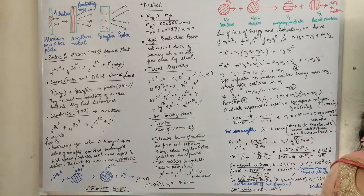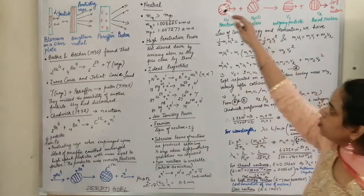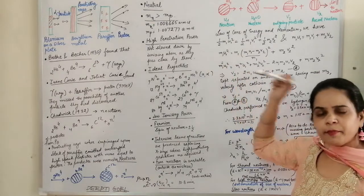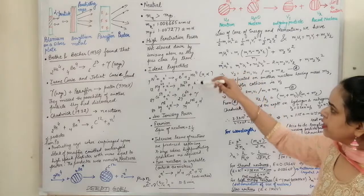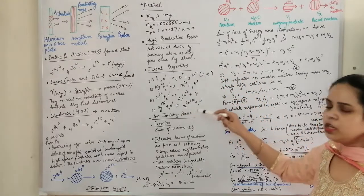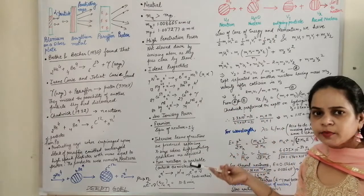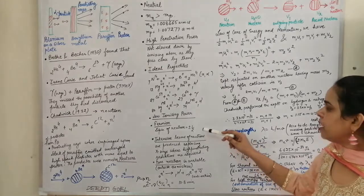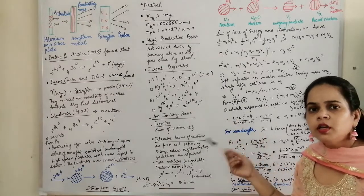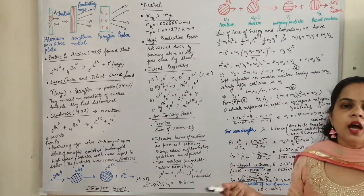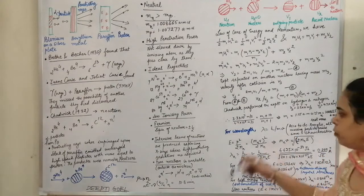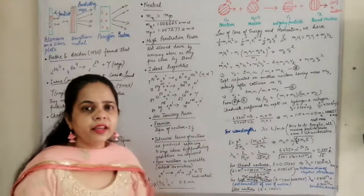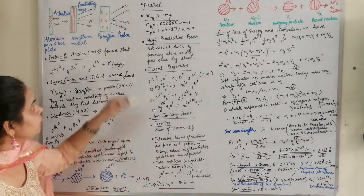To summarize the properties of neutrons: they are neutral; the mass of the neutron is slightly higher than the mass of the proton; it has high penetration power and can penetrate deep inside target elements; it is used as an ideal projectile for nuclear transmutation reactions, including producing gold in laboratories; it has low ionizing power; it is a fermion with half-integral spin; intensive neutron beams replace X-rays for deep penetration; and the free neutron is extremely unstable, decaying into a proton, electron, and antineutrino.